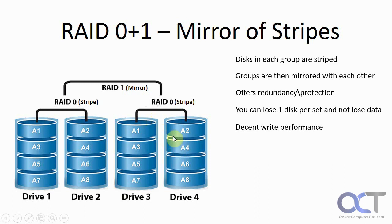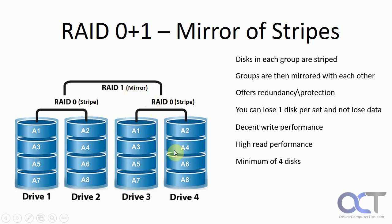RAID 0 plus 1 gives you decent write performance and high read performance because you have multiple disks to read from. You need a minimum of four disks — two for each mirrored group — with striping within each mirror. Just like RAID 1, you lose 50% of your total capacity because each group is a mirror of the other. So if all four disks are one terabyte each, you're going to have just two terabytes total.